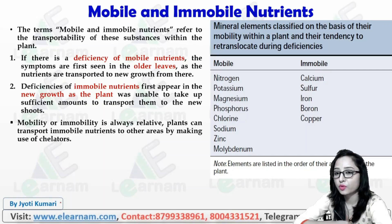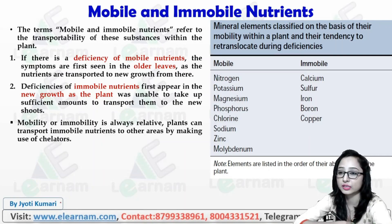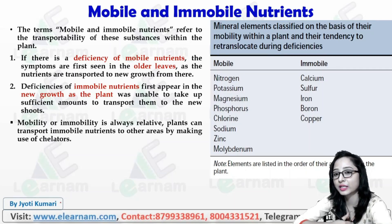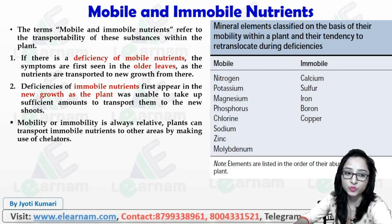The next topic is mobile and immobile nutrients. Mobile means nutrients which can move from one area to another area, and immobile means those which can't move from one area. Plants have different techniques, such as chelators, so they can obtain the immobile elements.